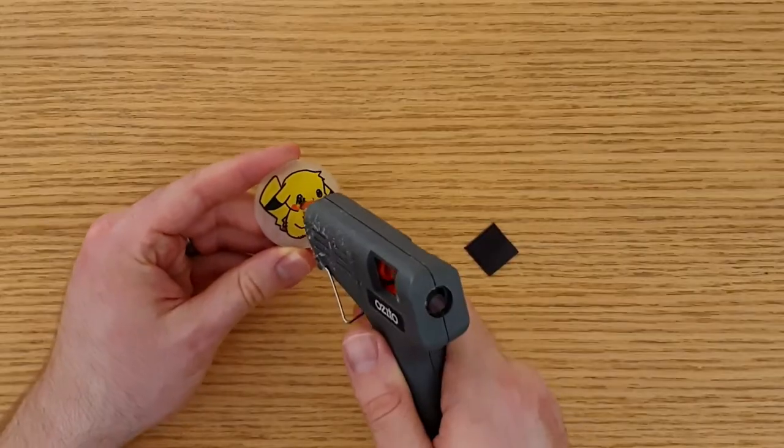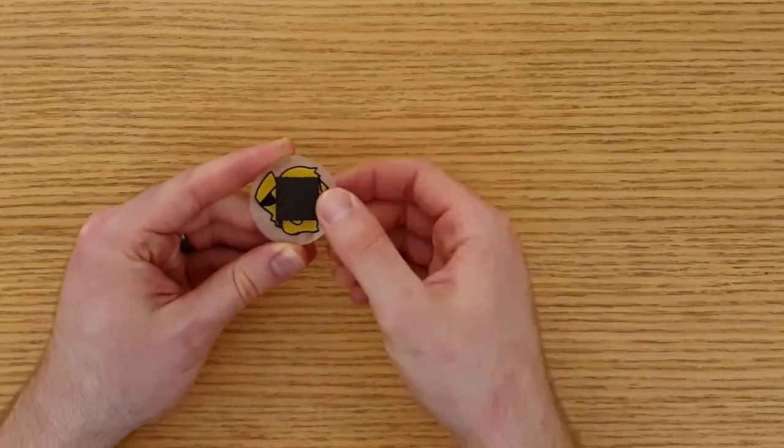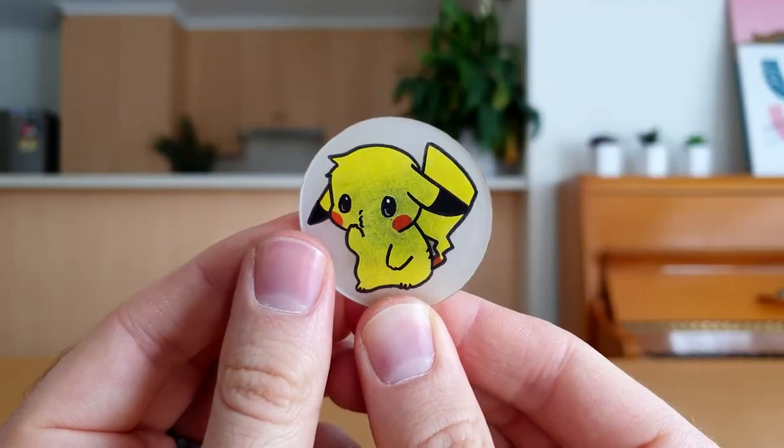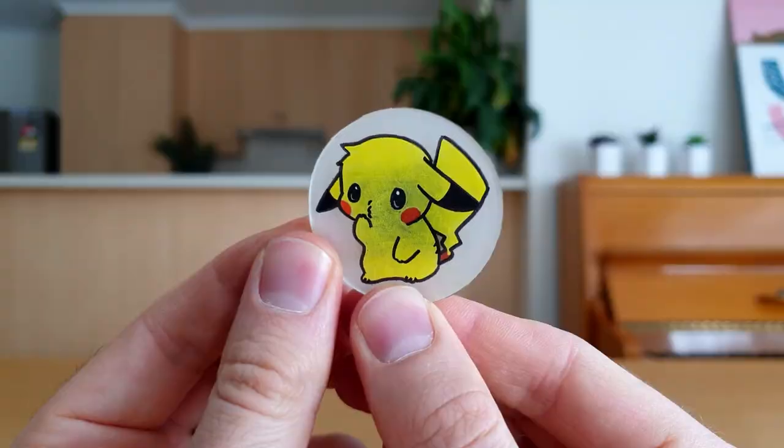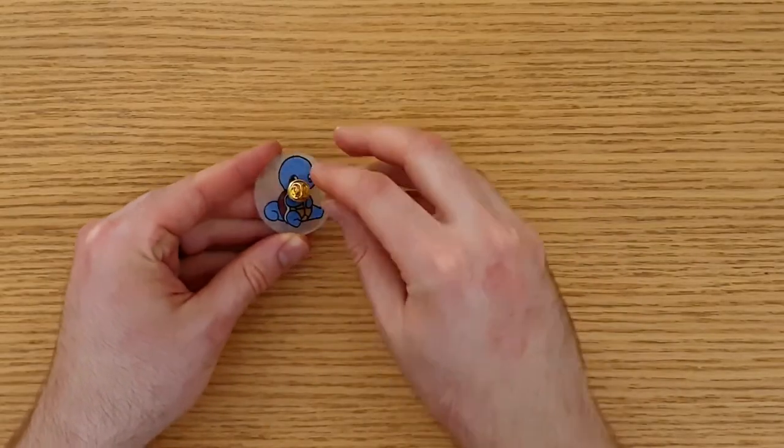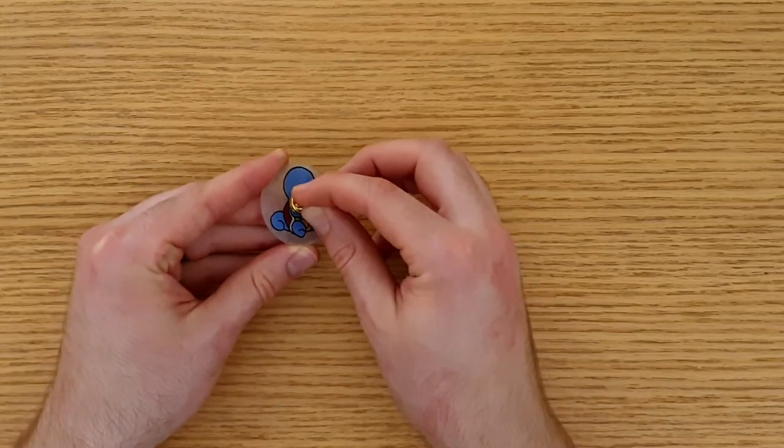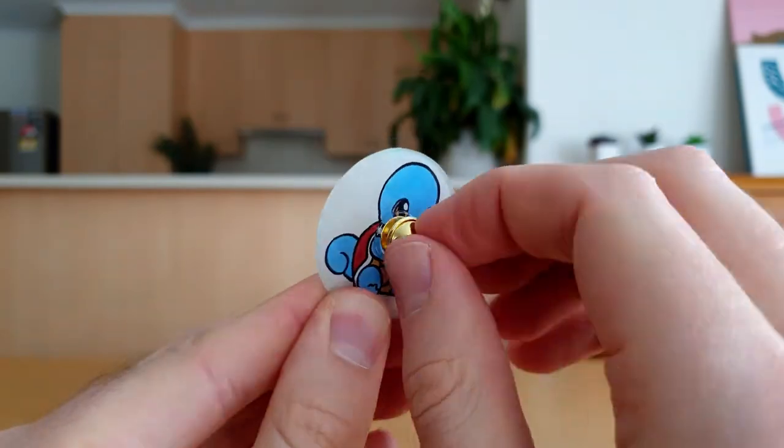Now we're going to turn them into some pretty cool things. Use some hot glue to attach a magnet to the back of Pikachu. That's how you make a fridge magnet. Use some hot glue to attach the flat side of the pin to the back of Squirtle. This is how your pin should look.